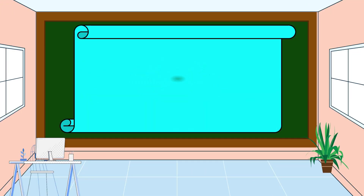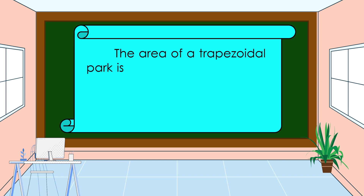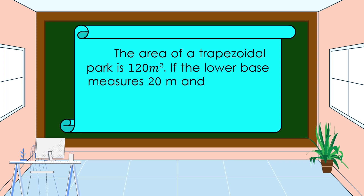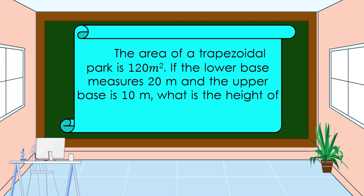This is our first problem. The area of a trapezoidal park is 120 square meters. If the lower base measures 20 meters and the upper base is 10 meters, what is the height of the trapezoidal park?